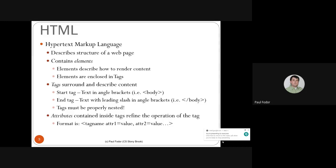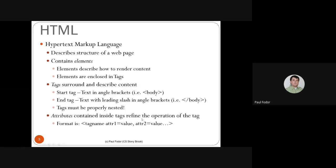HTML contains elements and these elements describe how to render the content of a page. For instance, h1 is a header, p is a paragraph, and so on. These elements are enclosed within tags, which are start and end tags that surround and describe the content. A start tag is text within angle brackets like 'body', and an end tag has a leading forward slash in angle brackets, meaning the end of that tag.